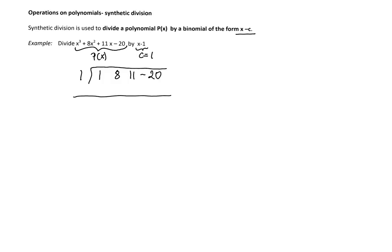So we leave a little bit of room and we'll draw a horizontal line. The synthetic division is done in the following way. We'll start with rewriting the leading coefficient below the horizontal line in the same column. So we'll write 1 in here.